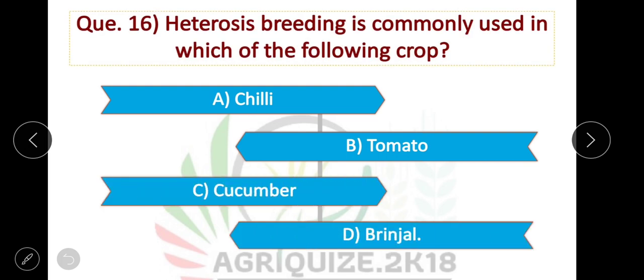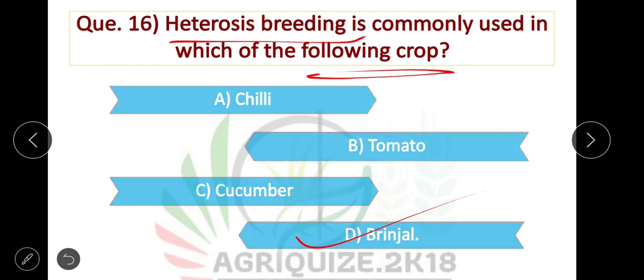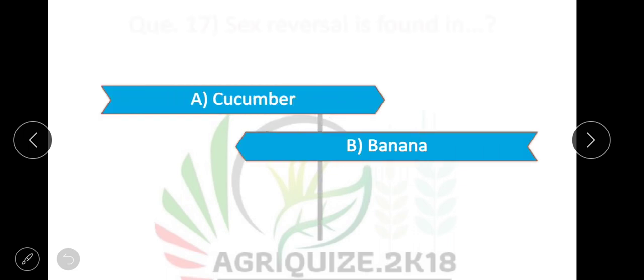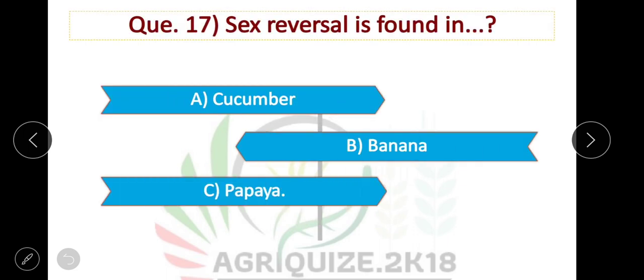Question number 16: Heterosis breeding is commonly used in which of the following crop? Option D is correct — in brinjal, heterosis breeding is commonly used.